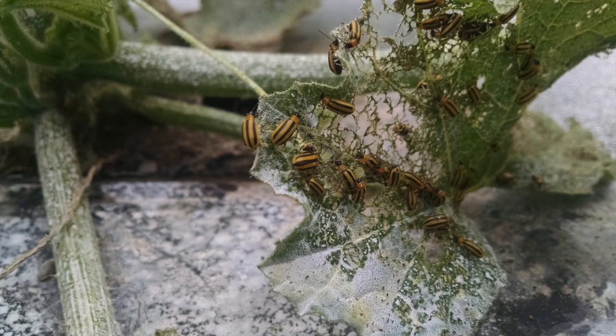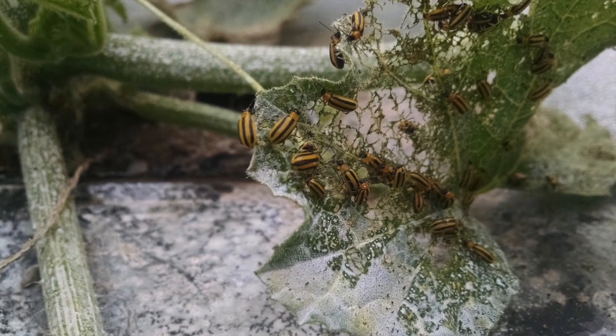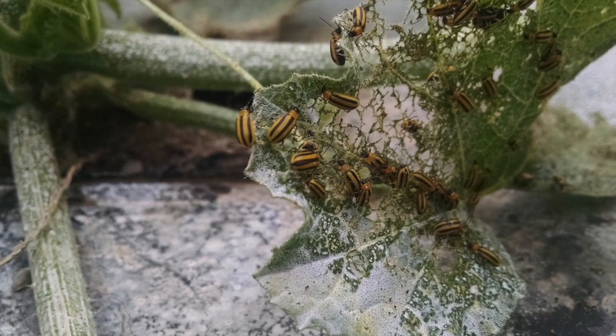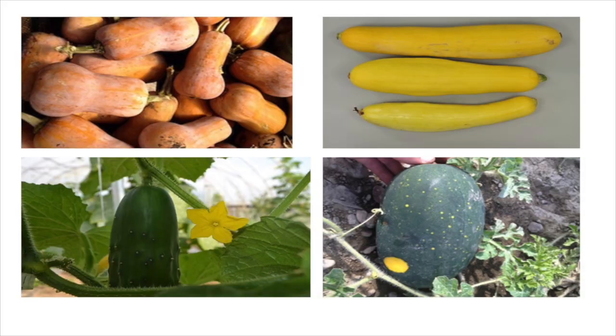The striped cucumber beetle is a specialist herbivore that feeds primarily on cucurbit crops. These include winter squash, summer squash, melons, and cucumbers. The damage they cause is variable, but occurs most often and to the greatest extent on these crops.